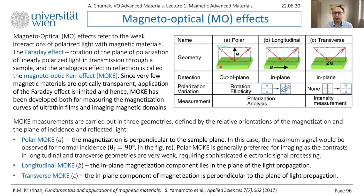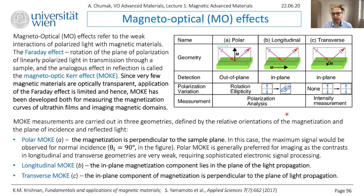Regarding MOKE, I would like to introduce the three different types of MOKE technique. If your sample is magnetized out of plane — M pointing as shown — then your incident light and reflected light will lie in the same plane as the magnetization M. When this is the case, we speak about polar MOKE. Afterwards, you can magnetize the sample in-plane. If the magnetization lies in the same plane as the incident and reflected light, then we are talking about longitudinal MOKE. If M is oriented perpendicular to the plane of incidence, it is transverse MOKE. This is the classification.